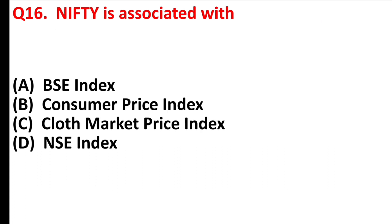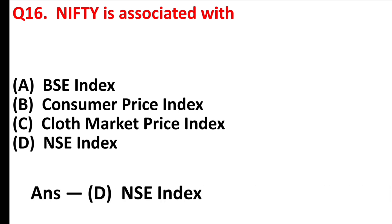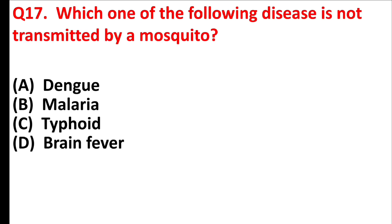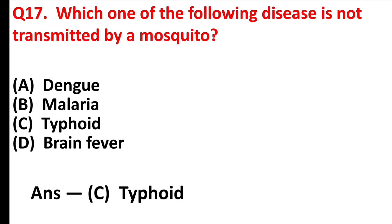Nifty is associated with? Which one of the following diseases is not transmitted by a mosquito? Answer is option C: typhoid.